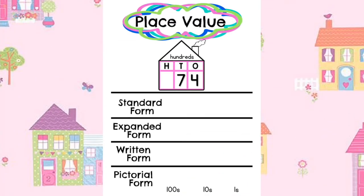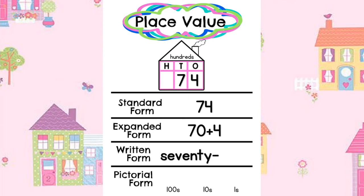Now that we've had some practice using the chart to write numbers in written form, let's use this diagram to show all the ways we know how to write a number. This is 74 in standard form. 70 plus 4 in expanded form. Here is the word in written form of 74. And here is the pictorial form: 7 tens and 4 ones.